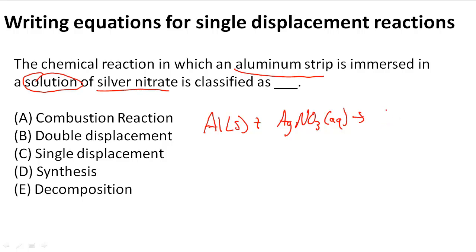Then the products are actually going to be Al(NO3)3. So what this means here